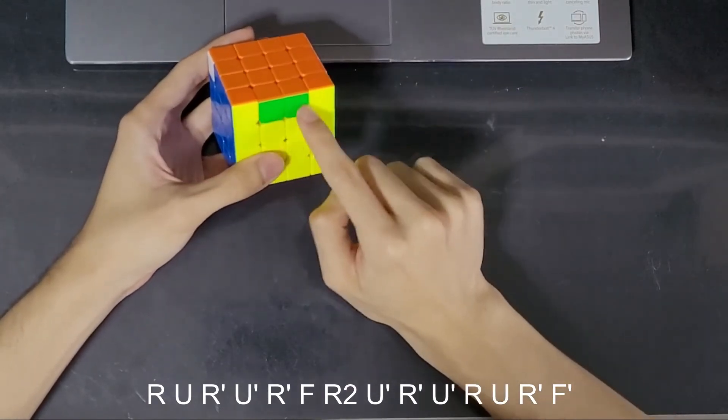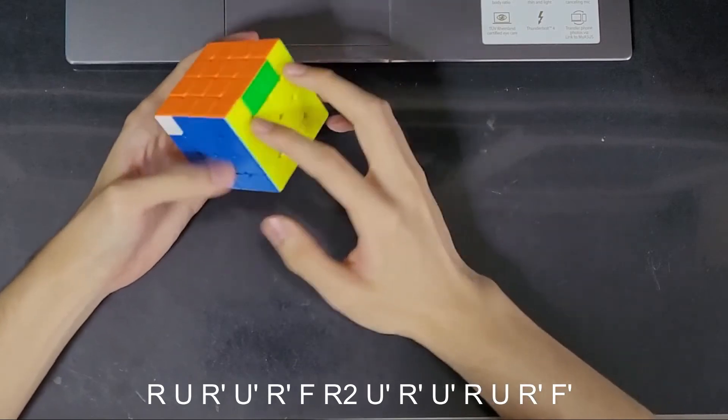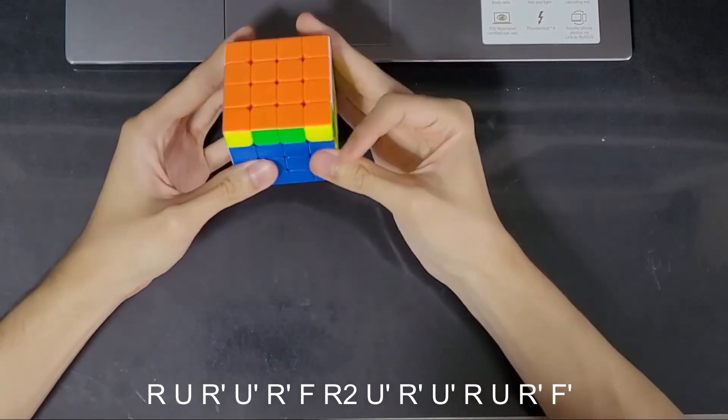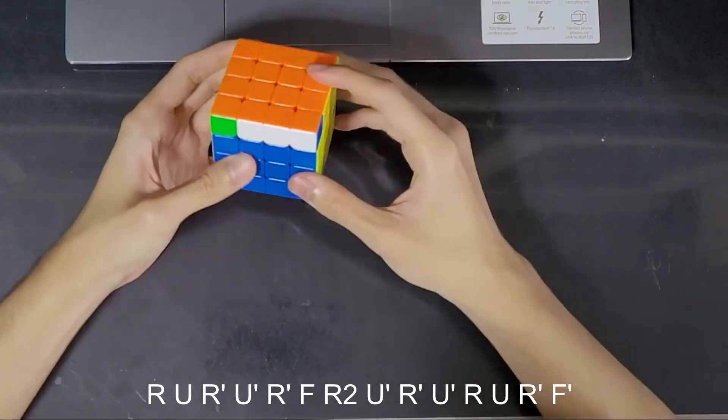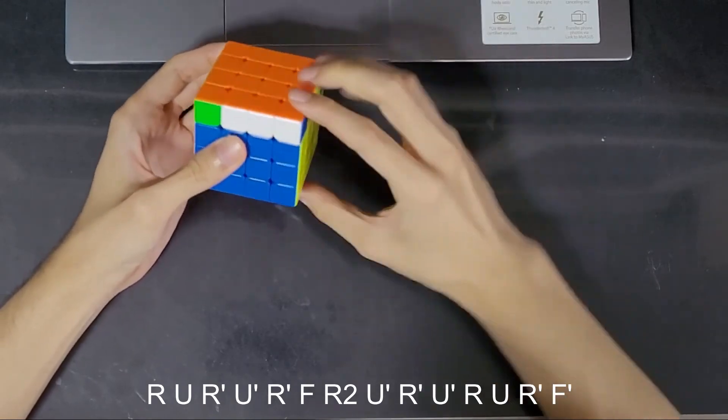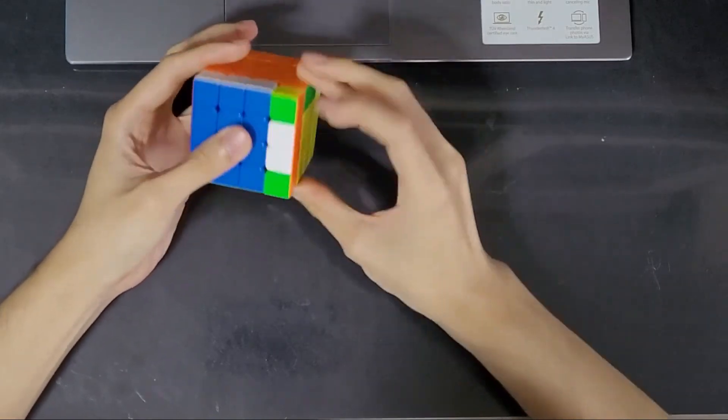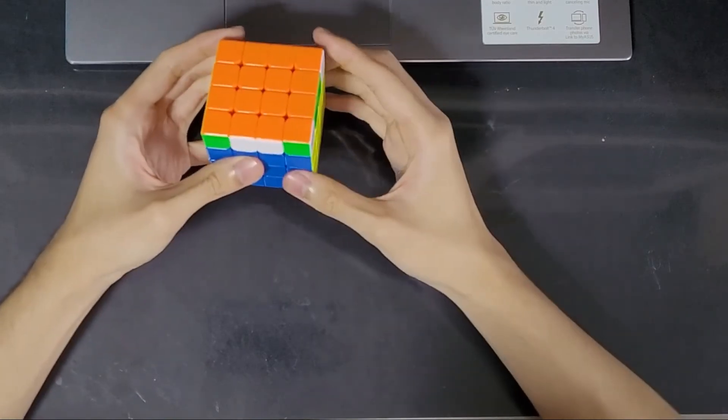Now we have one pair that is correct relative to each other. So we are going to put that pair on the left. And we are going to do the algorithm which will switch these two corners. Now every corner is in its correct position.